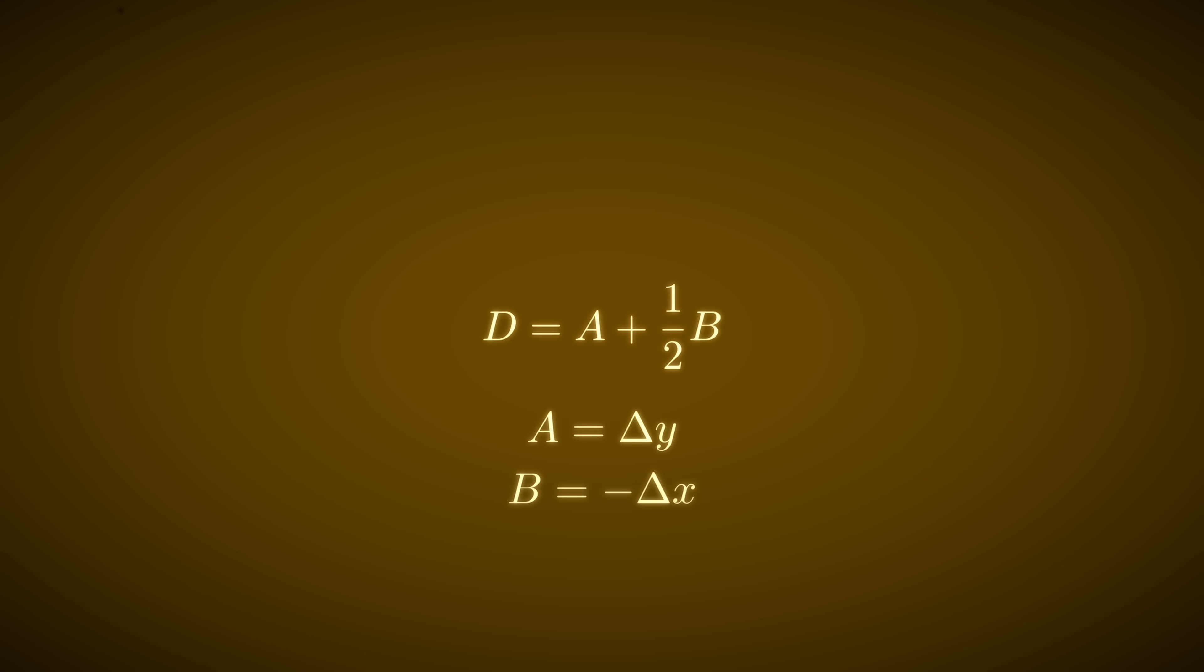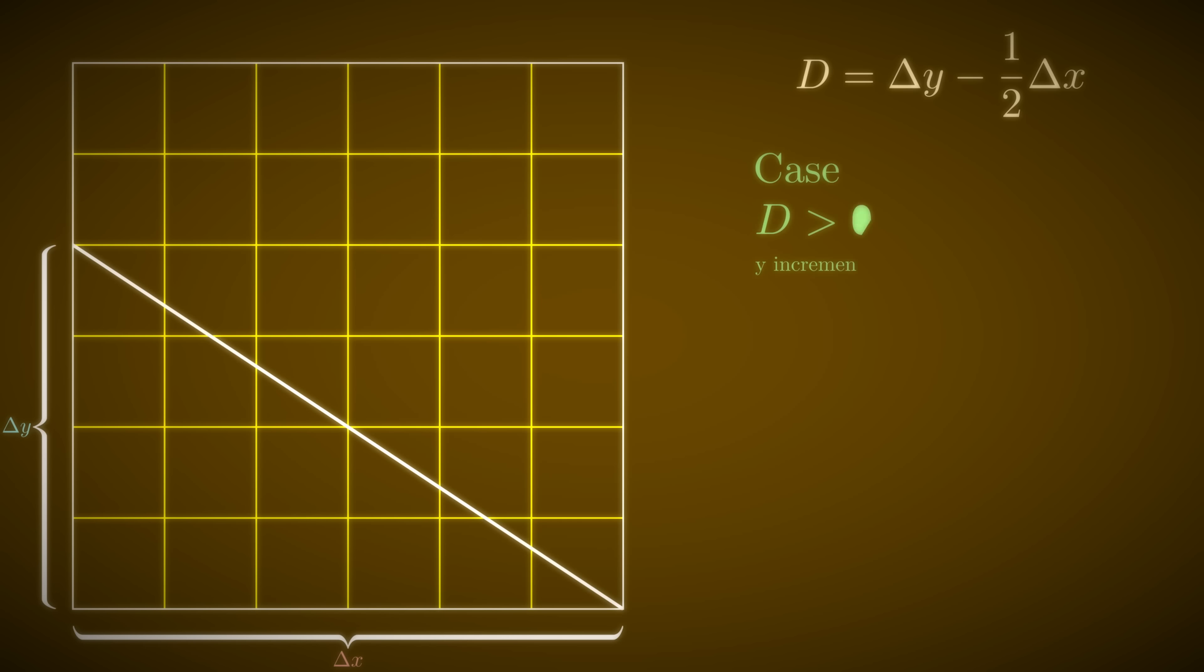Earlier we noted what a and b are equal to, so let's plug those values in. Just like our other method, if the difference is positive, we have case 1, where y increments. That means that if we plug in the adjusted values for the next points, change to standard form, and simplify, the change in d for this case is delta y minus delta x.